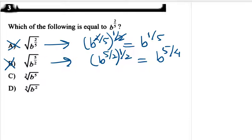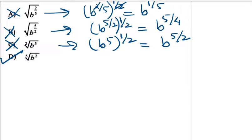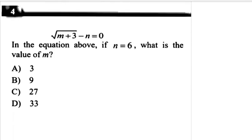Checking option C: B^5 whole to the power 1/2 gives B^(5/2) — not correct either. Hence the correct option is D. There is no need to check further.